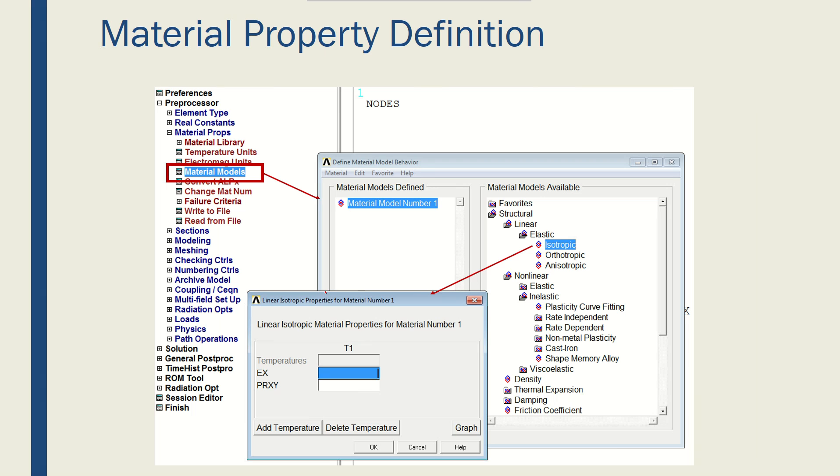In order to define the material property from the window, under preprocessor, you pick the material props, and then pick the material models, and a window like this will open up.